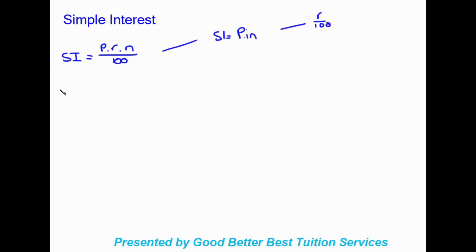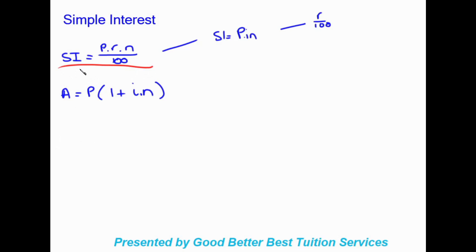If we want to work out our future value immediately — which is quicker — we use: A = P(1 + I × N). This is our simple interest formula that works out the future value directly. So to summarise: the SI = PRN/100 equation works out the amount of interest, and A = P(1 + I × N) works out our future value.